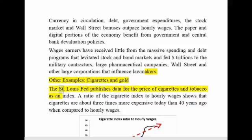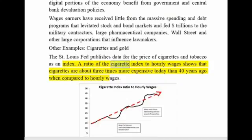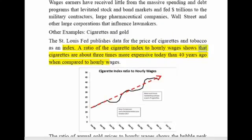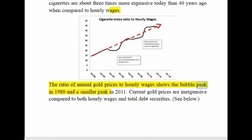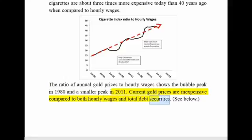Other examples: Cigarettes and gold. The St. Louis Fed publishes data for the price of cigarettes and tobacco as an index. A ratio of the cigarette index to hourly wages shows that cigarettes are about 3 times more expensive today than 40 years ago when compared to hourly wages. The ratio of annual gold prices to hourly wages shows the bubble peak in 1980 and a smaller peak in 2011. Current gold prices are inexpensive compared to both hourly wages and total debt securities.